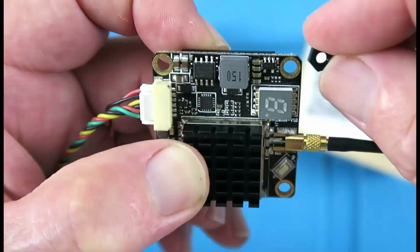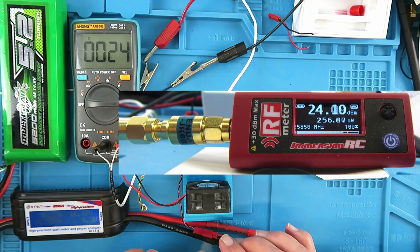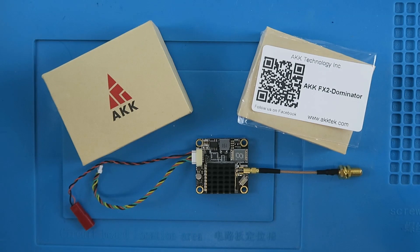On today's episode, I'm looking at this AKK FX2 Dominator long-range video transmitter for FPV use.